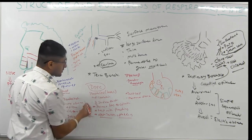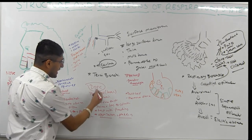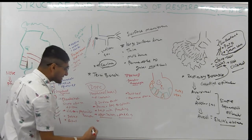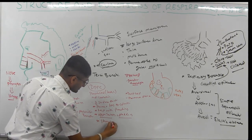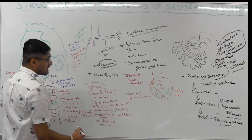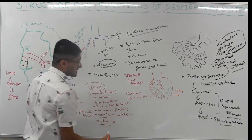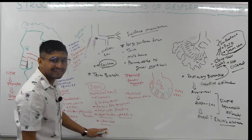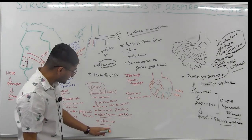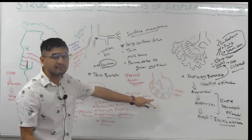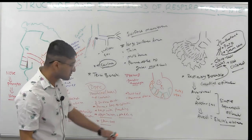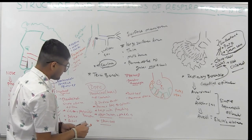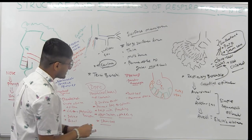Type 2 pneumocytes also act as stem cells. If type 1 pneumocytes are damaged, the type 2 pneumocytes have the ability to make more type 1 pneumocytes. These are very important types of cells.